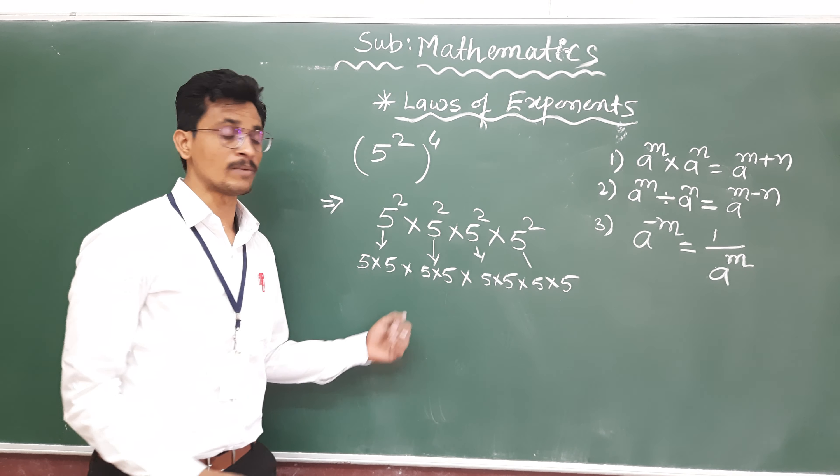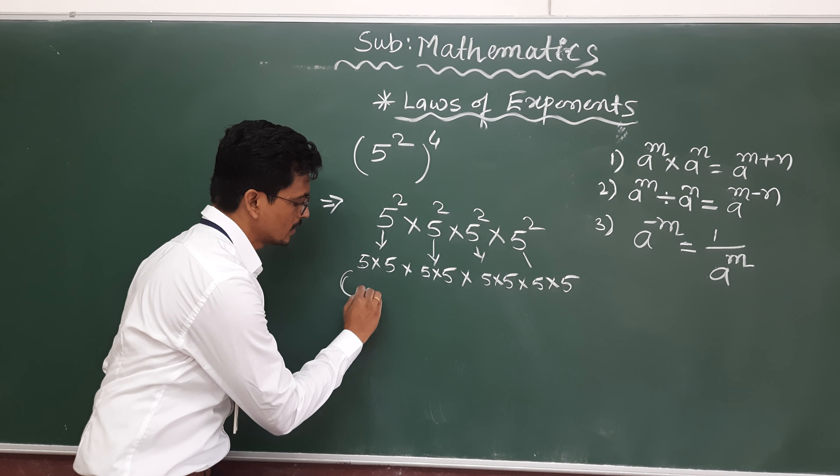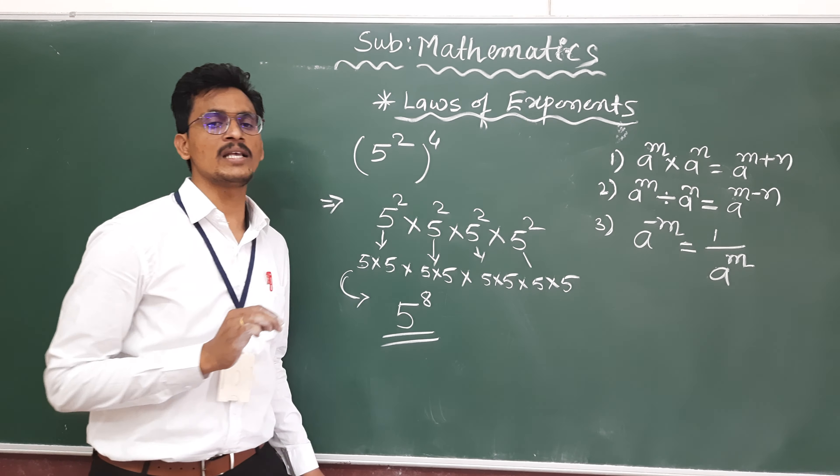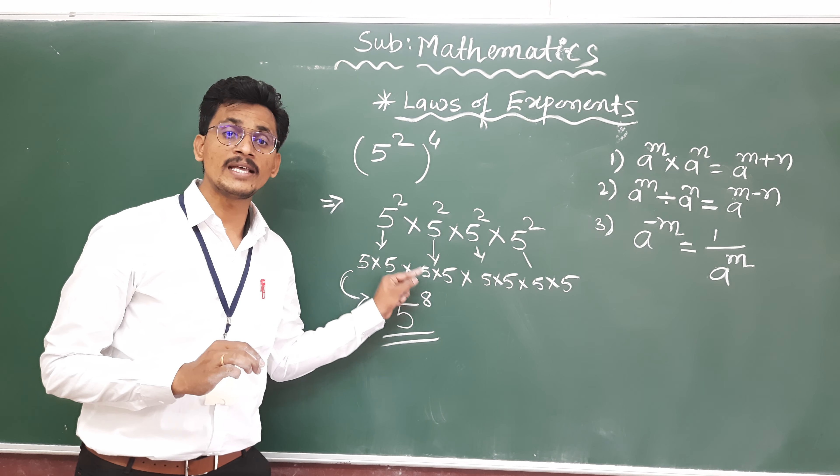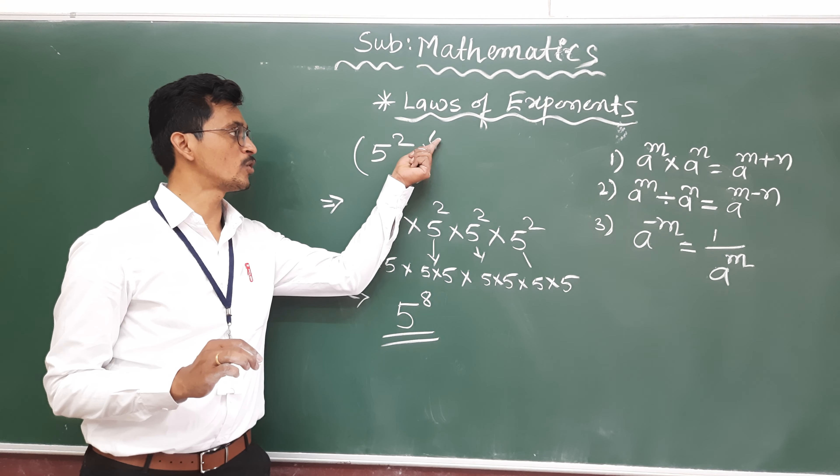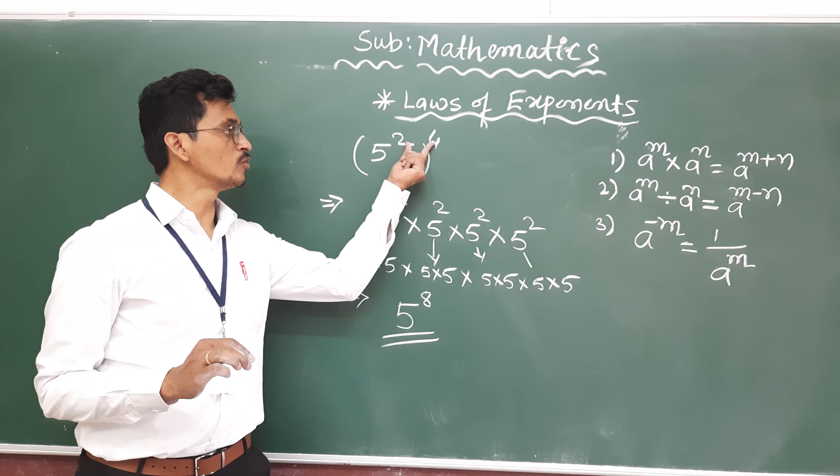8 times multiplication means we can write this as 5 raised to power 8. And if we will check, here is 2, here is 4, 2 times 4 is 8 we are getting.